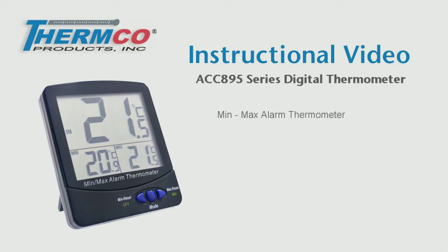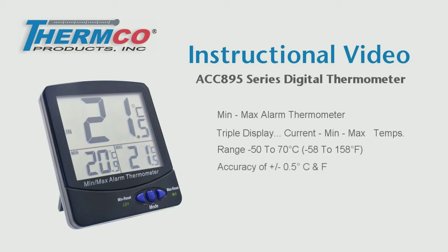This unit is a min-max alarm thermometer with large-digit triple display that simultaneously shows the current, min and max temperatures and has a temperature range of minus 50 to 70 degrees Celsius or minus 58 to 158 degrees Fahrenheit with an accuracy of plus or minus half a degree C and F.